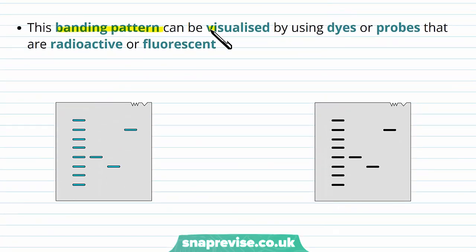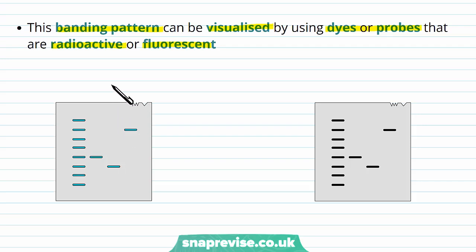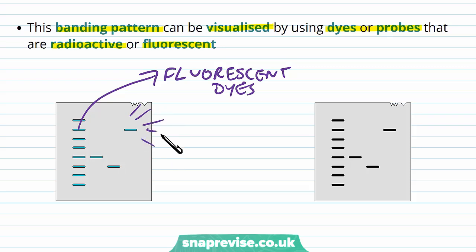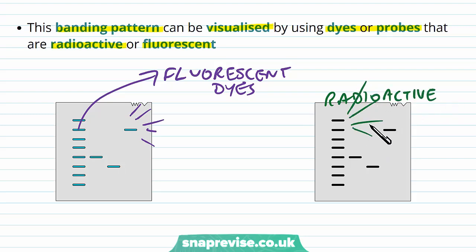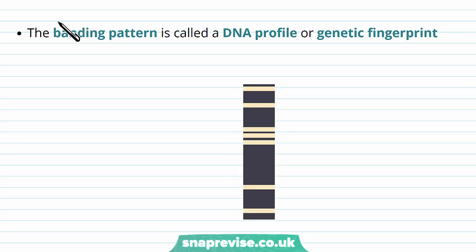The banding pattern can be visualised by using dyes or probes, which can be radioactive or fluorescent. When the DNA is run through the gel, we still can't see the DNA because it's very small, but fluorescent dyes give off a particular signal or colour, or radioactive dyes or probes give off signals like x-rays. The unique banding pattern that we make is called the DNA profile, or the genetic fingerprint.